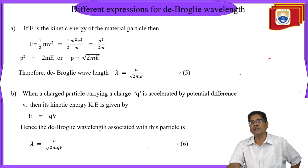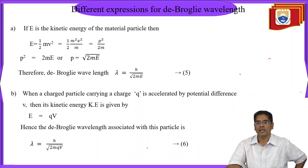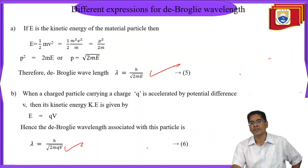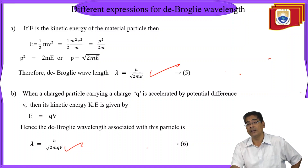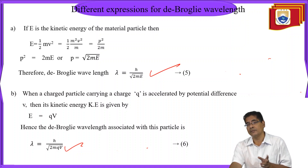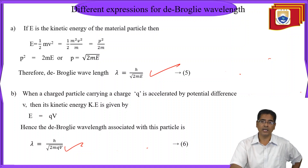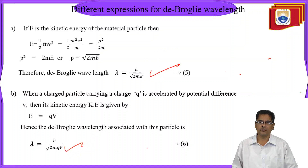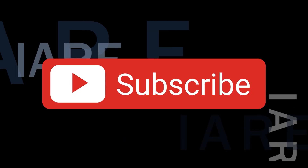This is the expression for de Broglie wavelength in terms of charged material particles. For de Broglie wavelength associated with material particles imparted with energy, we write lambda equals h by under root 2mV, or equivalently lambda equals h by mv.